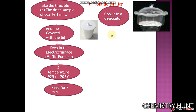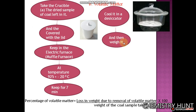Cool the crucible in a desiccator, then take its weight. The percentage of volatile matter equals the loss in weight due to removal of volatile matter, divided by the weight of the coal sample taken, multiplied by 100. This was about the calculation of volatile matter.